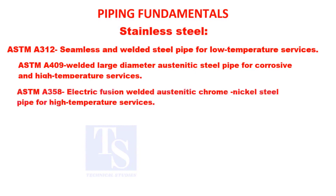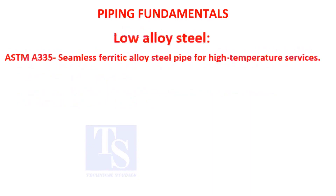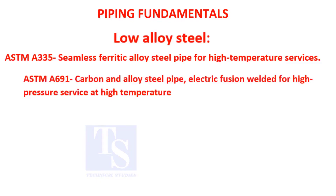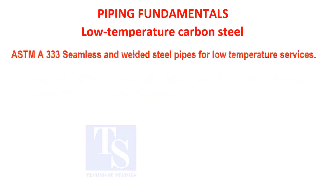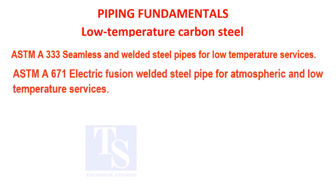ASTM A-358: electric fusion welded austenitic chrome nickel steel pipe for high temperature services. ASTM A-691: carbon and alloy steel pipe, electric fusion welded, for high pressure service at high temperature. ASTM A-333: seamless and welded steel pipe for low temperature services. ASTM A-671: electric fusion welded steel pipe for atmospheric and low temperature services; available sizes are larger than 16 inches.